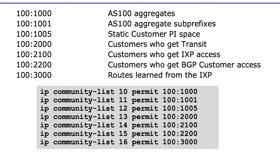All routes learned from the IXP could be tagged with community 3000. This is how you could implement it in Cisco IOS. You have community list 10 to match the aggregates, which is 100:1000; 11 for 1001; 12 for 1005, which is the customer static PI space; all the way down to 16, which is for the 3000 community — routes learned from the IXP.